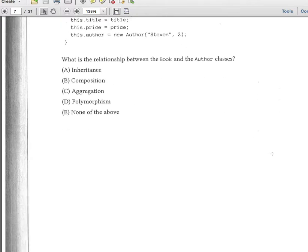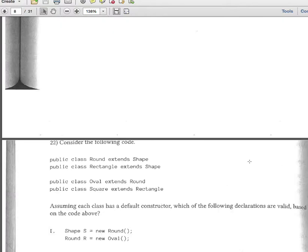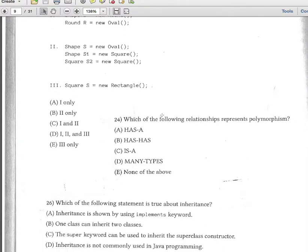Let's see, is there anything else? Yeah, there's one more. This one: which of the following relationships represents polymorphism? There's only two types of relationships in Java. The first one is hasA and isA.